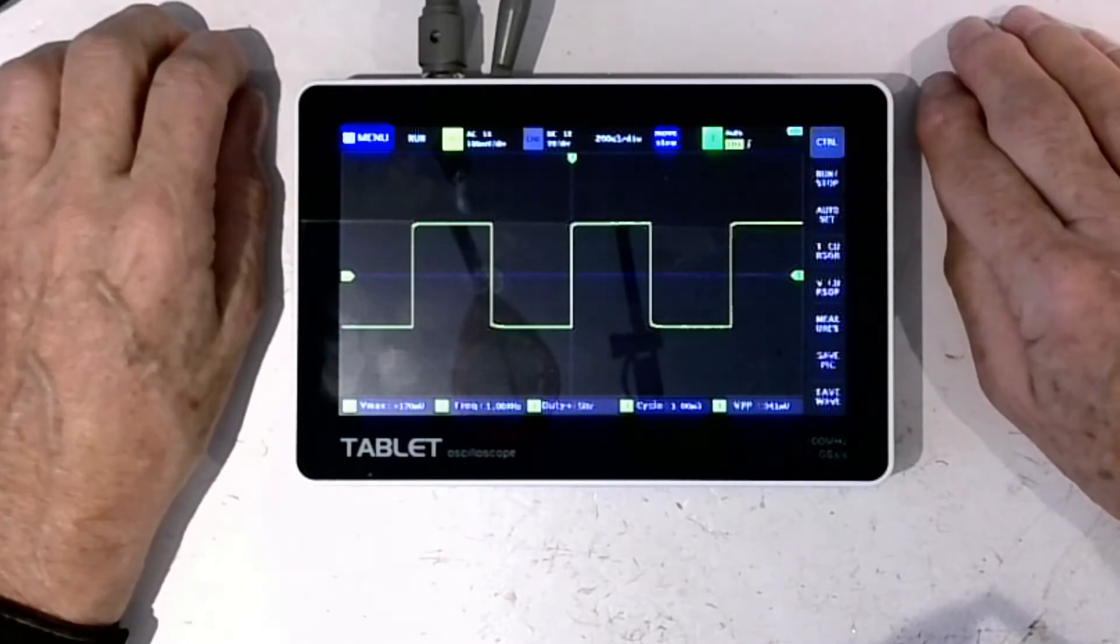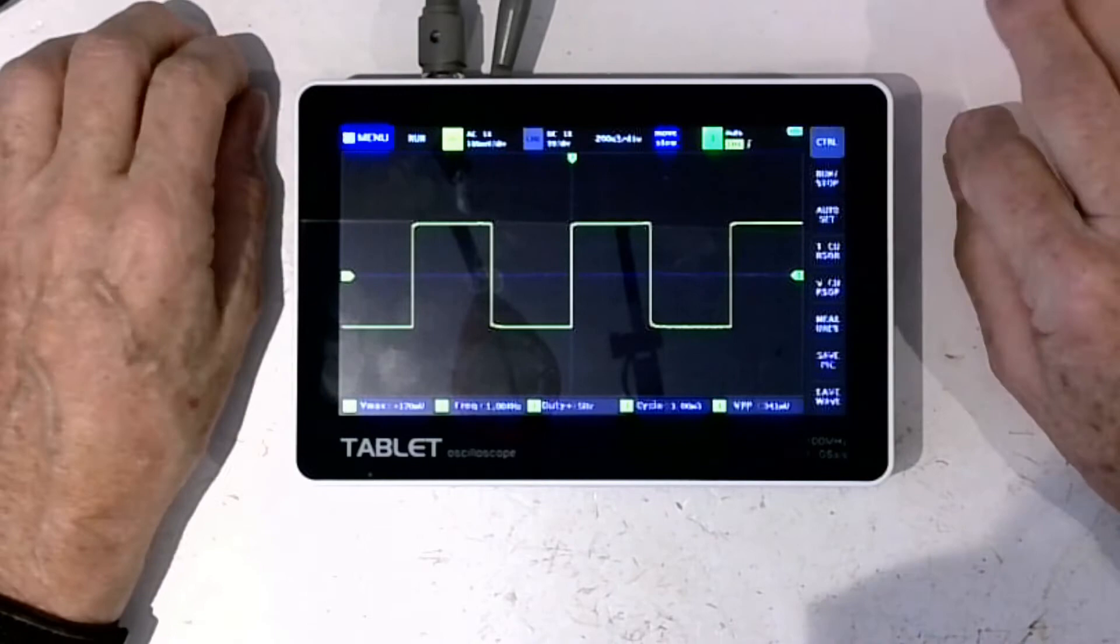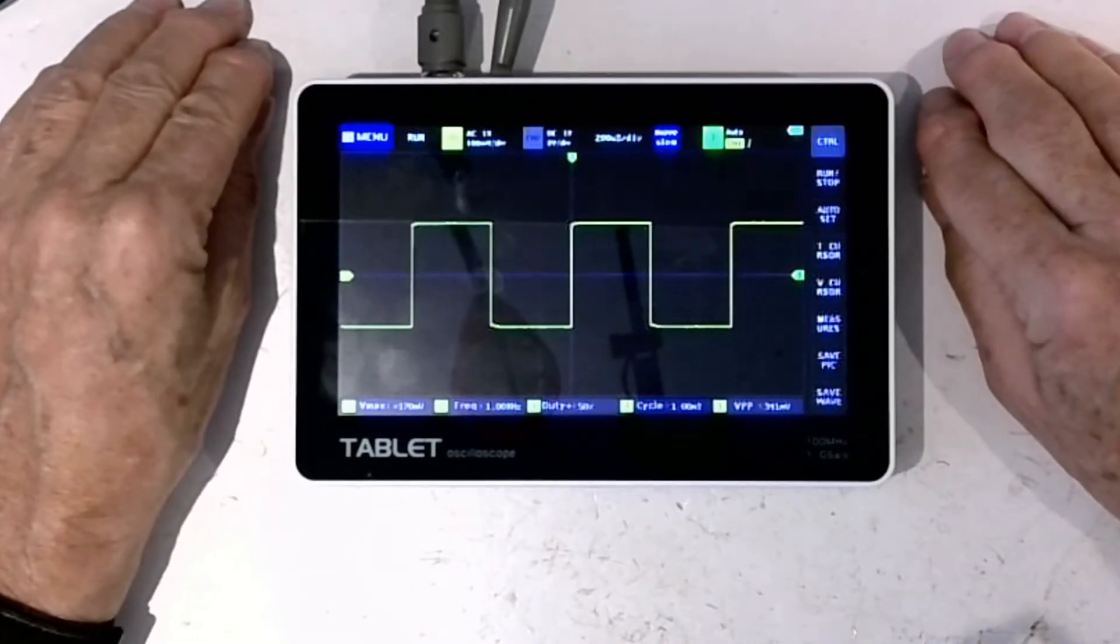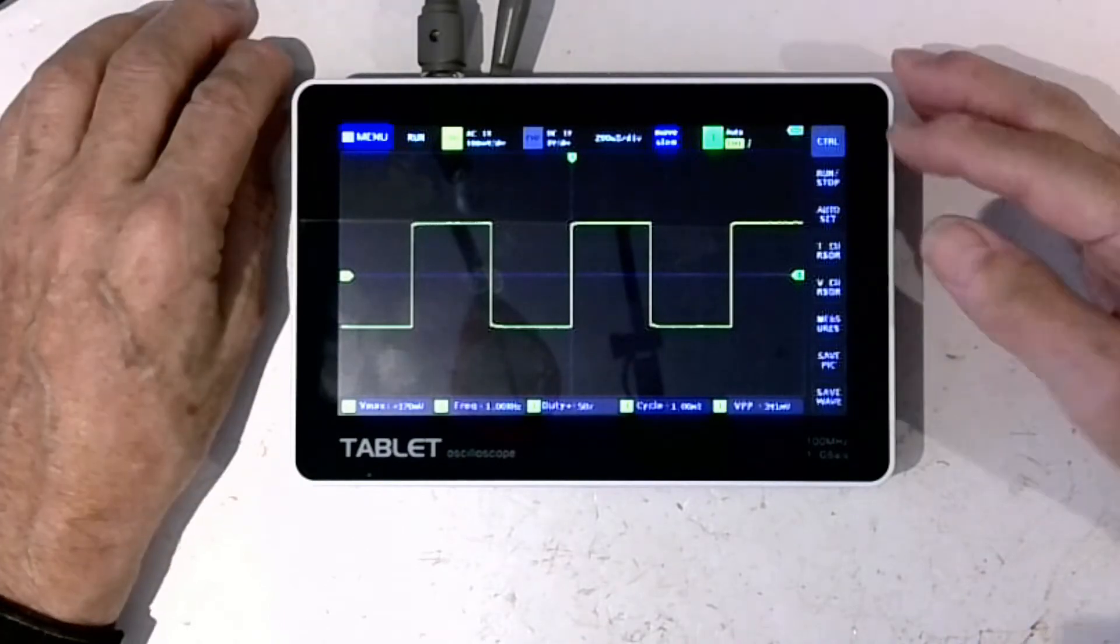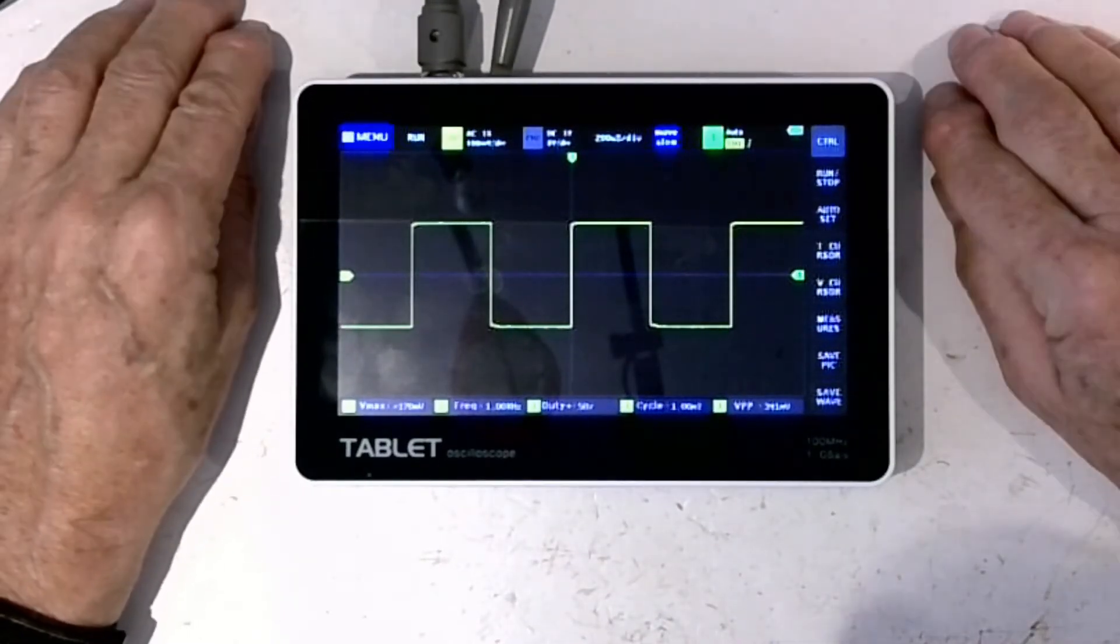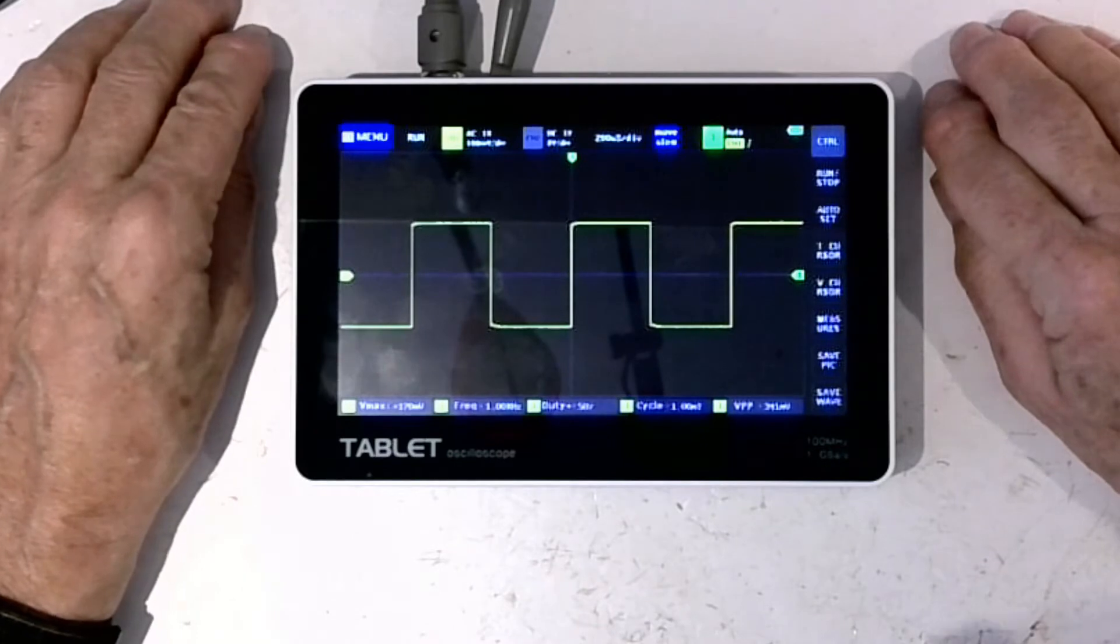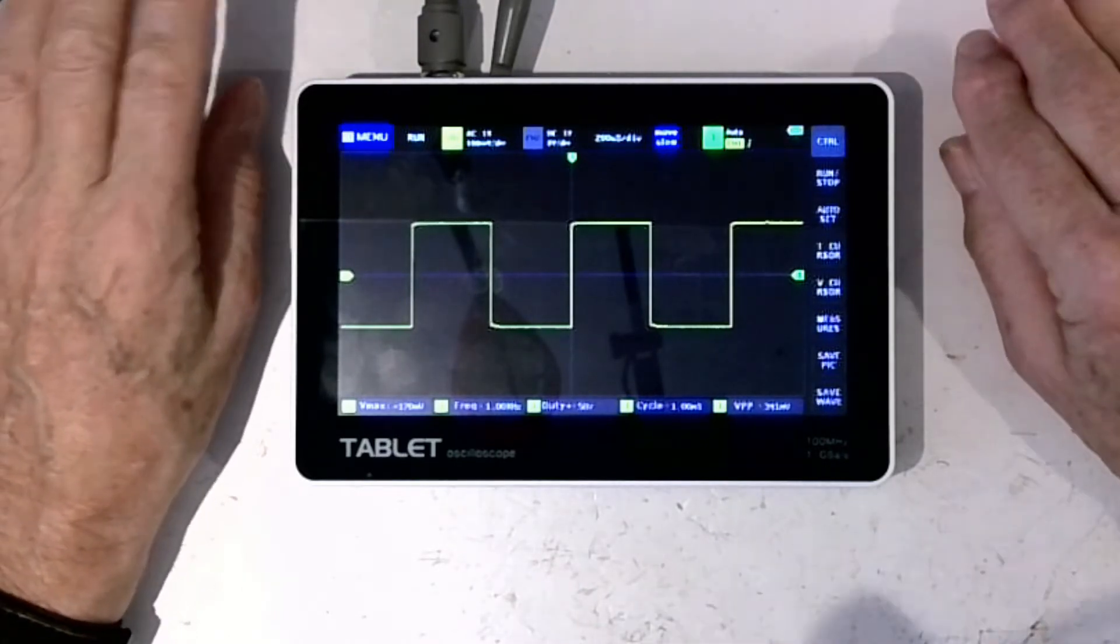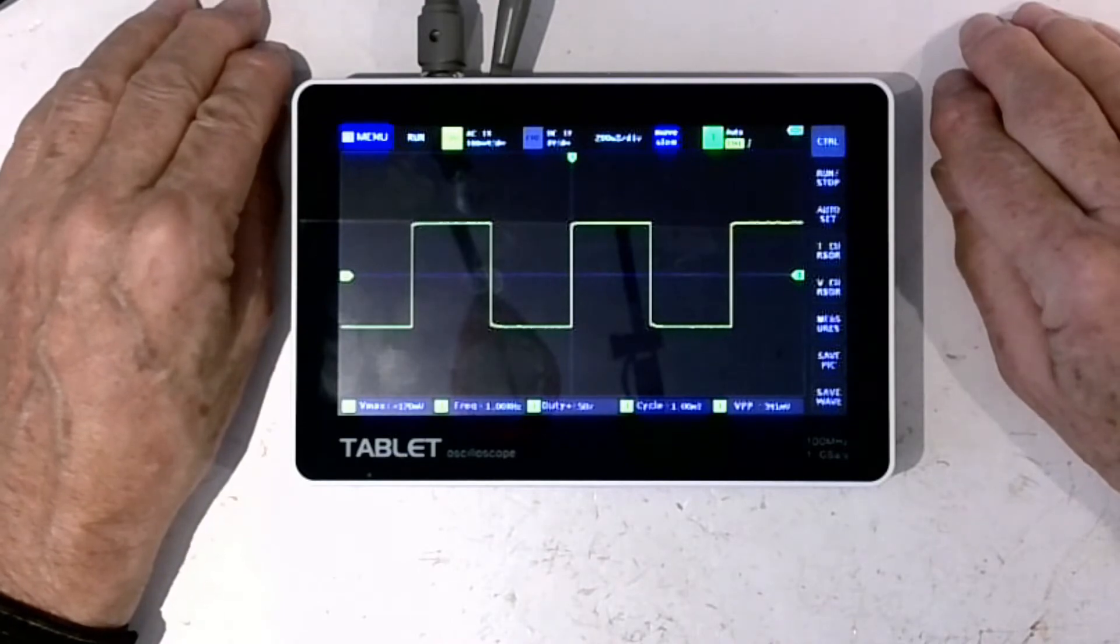The only thing that happens is that the amplitude drops off. But to my way of thinking, if I want to measure something up to those high frequencies, I'll use my main scope. What I want this for is for checking stuff out where I want to see a waveform and I'm not particularly bothered too much as to what the main parameters of that waveform are.